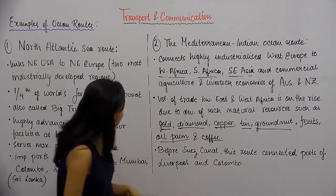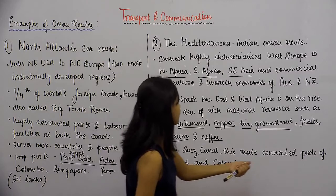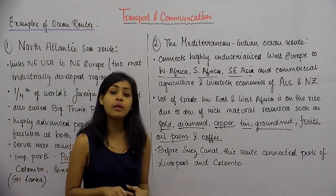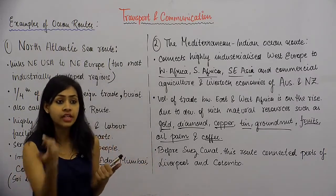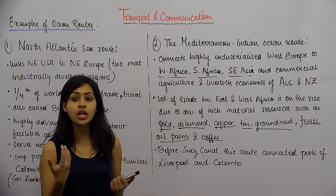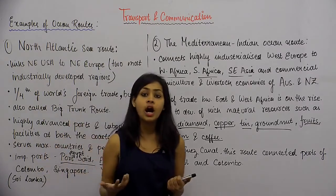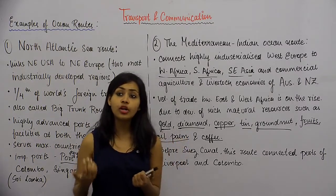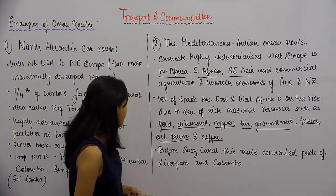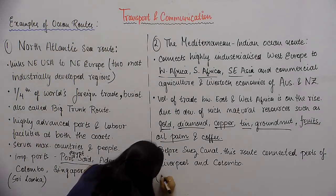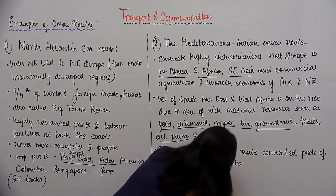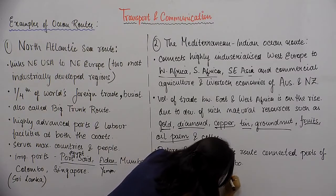Before the Suez Canal, this route connected ports of Liverpool and Colombo. Now with the Suez Canal, this route is not as relevant for trade between Western Europe and the African or Asian regions. But before the Suez Canal was operational, this was the route that connected Liverpool — in North West England — all the way to Colombo in Sri Lanka.